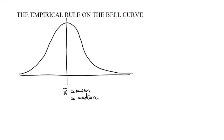Half of the men in the world would be taller than that. Half of the men in the world would be smaller than that. Now, the empirical rule adds to that concept the concept of standard deviation.